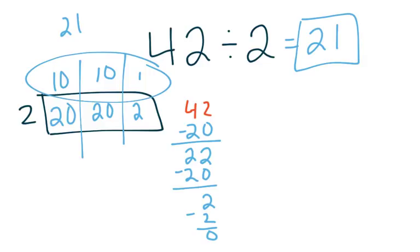What we're going to do with the distributive property is very similar, except instead of drawing it in the area model, we're going to draw it like we did distributive property for multiplication. The difference is that when we did distributive property for multiplication, just like with the area model for multiplication, we expanded one of our factors. In division, we're not going to expand anything. Instead, we have to think just like we did with the area model: what pieces can we take away from our total?